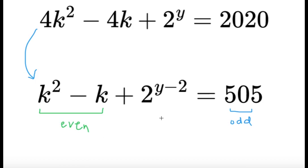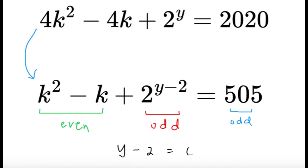So we have an even number plus 2 raised to (y − 2) equal to an odd number. Therefore 2 raised to (y − 2) must be odd. For a power of 2 to be odd, the exponent must equal 0, since any other positive exponent gives an even number. So from here we conclude that y equals 2.